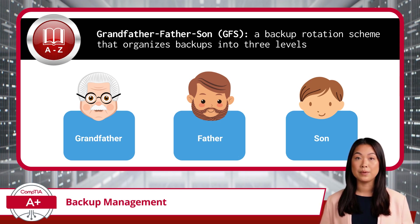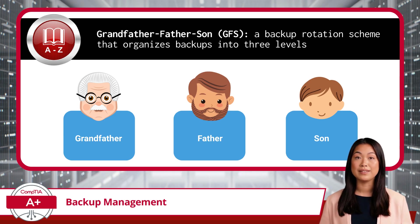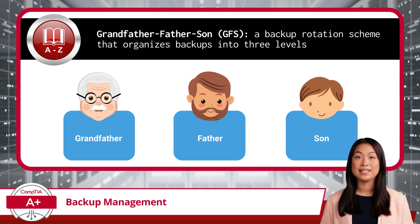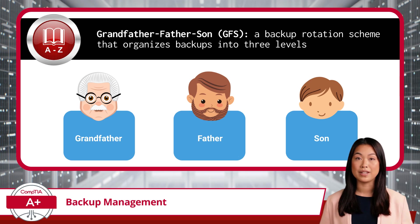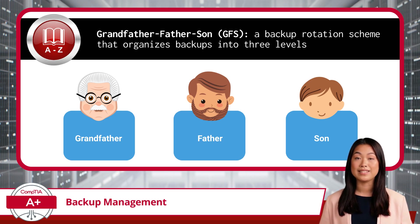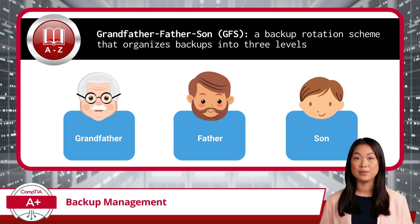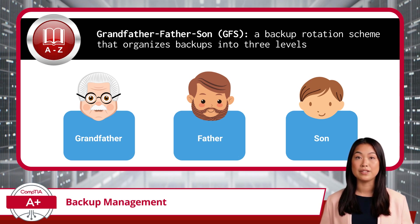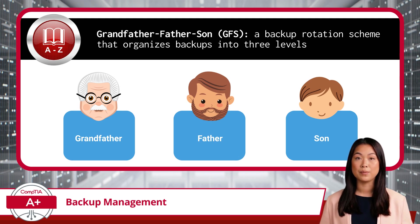GFS ensures that you always have multiple recovery points at different intervals. If you need to recover something recent, a son backup will typically have the necessary data. For changes or files that are further in the past, a father or grandfather backup can step in. This tiered system reduces the risk of data loss, as older backups can serve as a fallback if a newer one is unavailable or corrupted. One of the main advantages of GFS is its ability to optimize storage space while maintaining sufficient redundancy. Instead of keeping every backup indefinitely, GFS prioritizes the most recent backups for quick access and retains higher-level backups less frequently for long-term protection. This makes it a versatile strategy suitable for both on-site and off-site storage solutions, offering a reliable safety net for your data no matter where it resides.